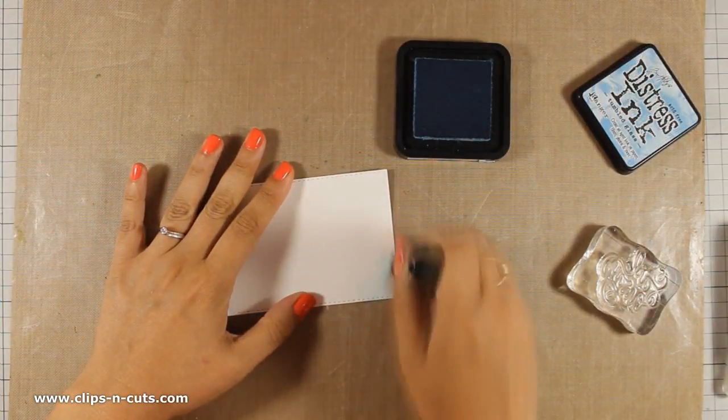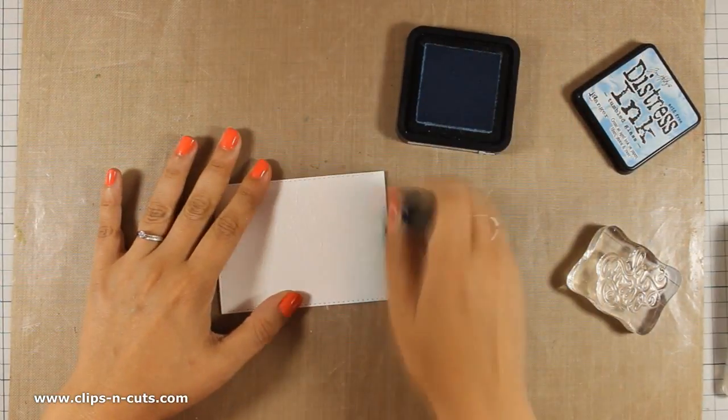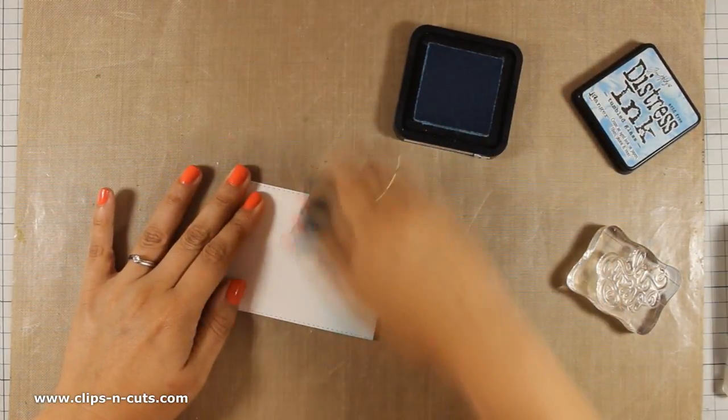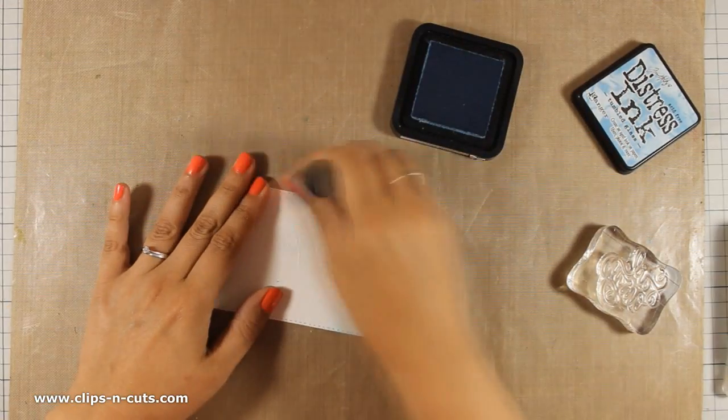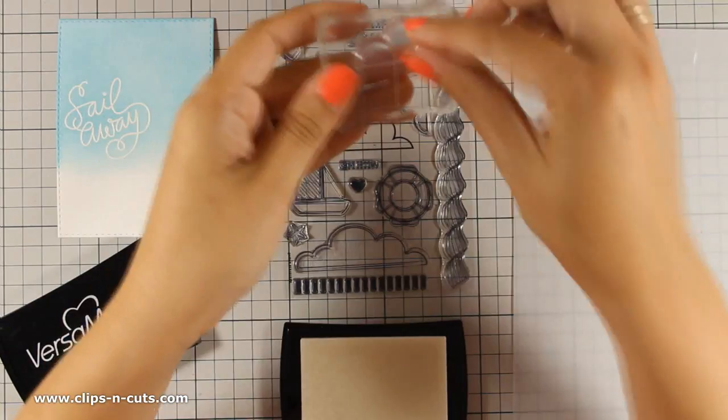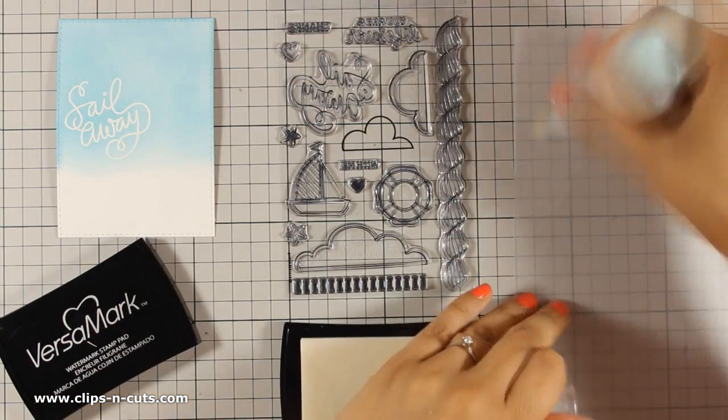I am going to use distress ink to create my sky for my little scene for the card so I am using tumbled glass and I am applying it with my round mini tool. As I move on and apply more and more of this ink you will see that since the embossing powder resists the ink the sentiment is now visible.